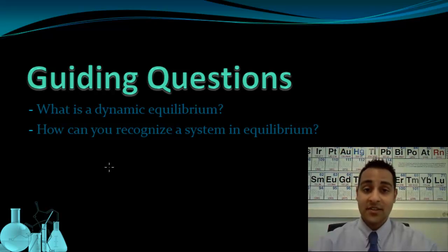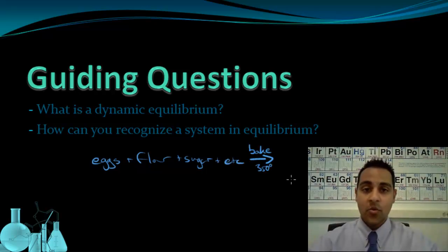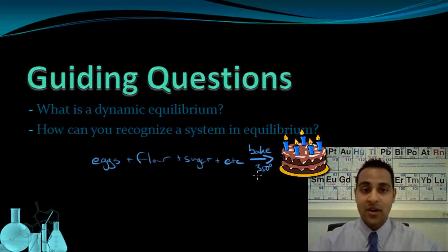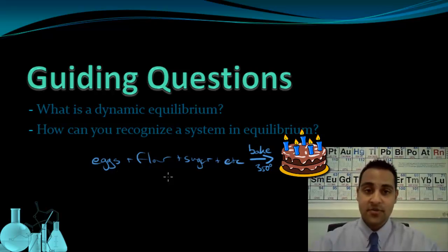Let's say we take some ingredients for cooking — some eggs mixed together with flour, sugar, and other ingredients — and we bake these at 350 degrees. We're going to get some baked goods out of this, let's say a cake. This particular process is now done, the cake is the final product, and there's no way to uncook the cake and get back the eggs, flour, and sugar. So we say that this process is irreversible.